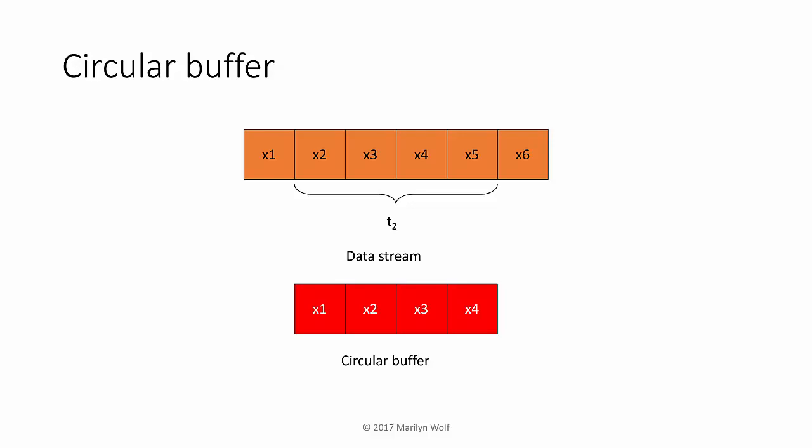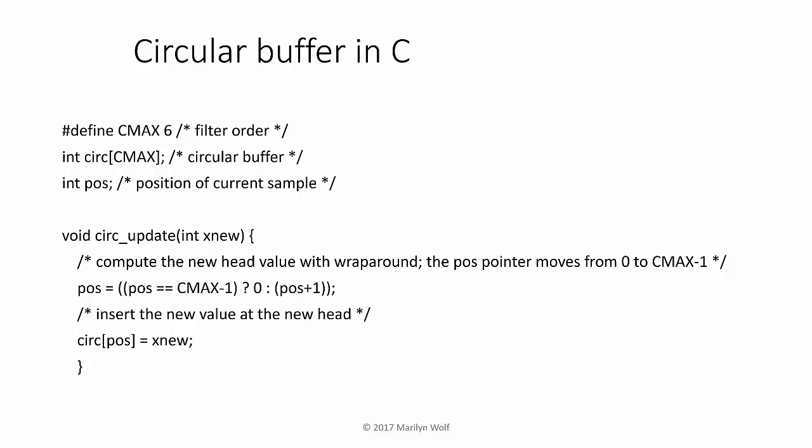Rather than move around elements in the circular buffer, we'll simply replace x1 with x5. On the next time step, when we are no longer using x2, we can replace that with x6, which will be the next sample. Here's C code that performs the circular update required to manage this circular buffer. The position of the head of the circular buffer moves in a circular fashion. When we get to the end of the buffer, we wrap around back to the beginning. We have code to calculate the next position that checks whether we're at the end of the buffer, and if so, wraps around. This code then takes the argument, which is the new value, and puts it in to the new position.